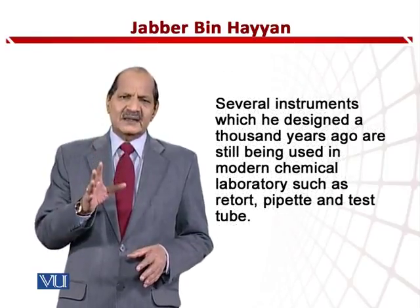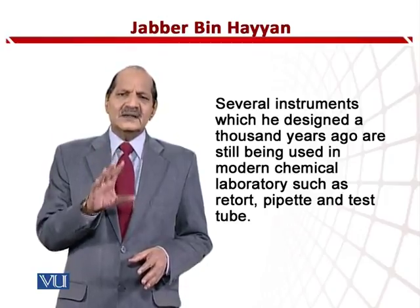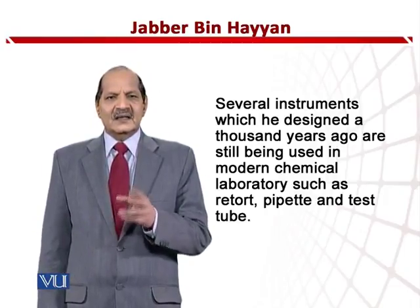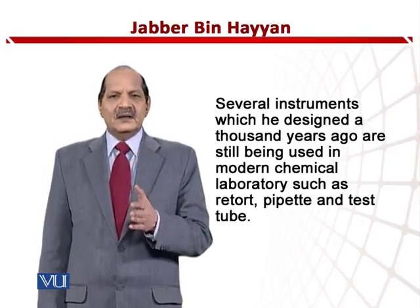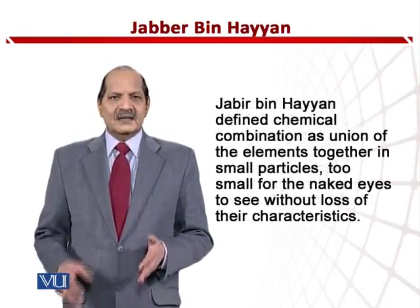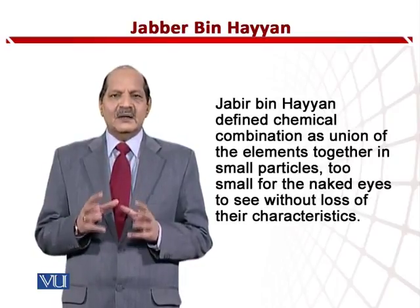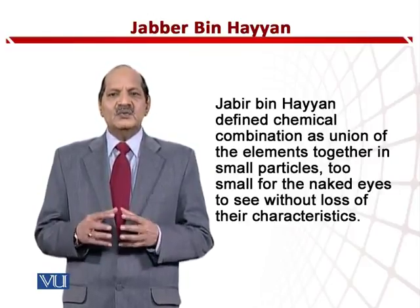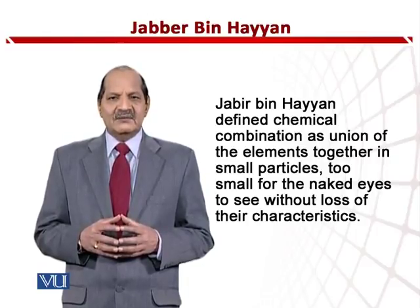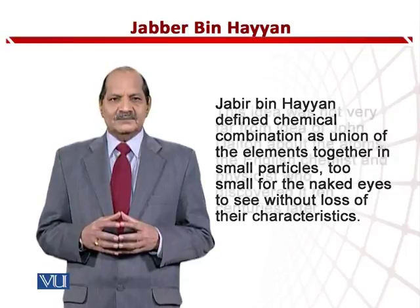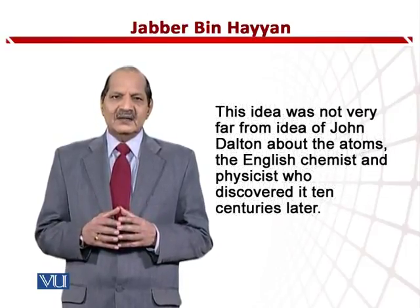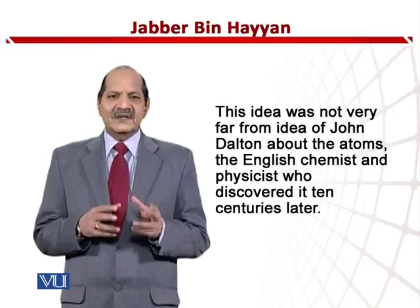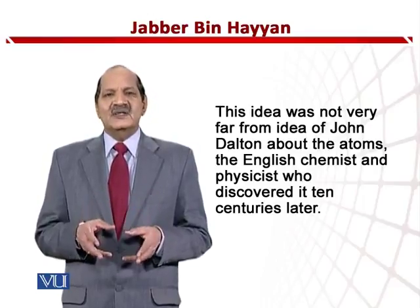Several instruments which he designed a thousand years ago are still being used in modern chemical laboratories, such as the retort, alembic, and test tube. Jabir bin Hayyan defined chemical combination as the union of elements together in particles too small for the naked eye to see, without loss of their individual characteristics. This idea was not far from John Dalton's atomic theory, discovered ten centuries later.